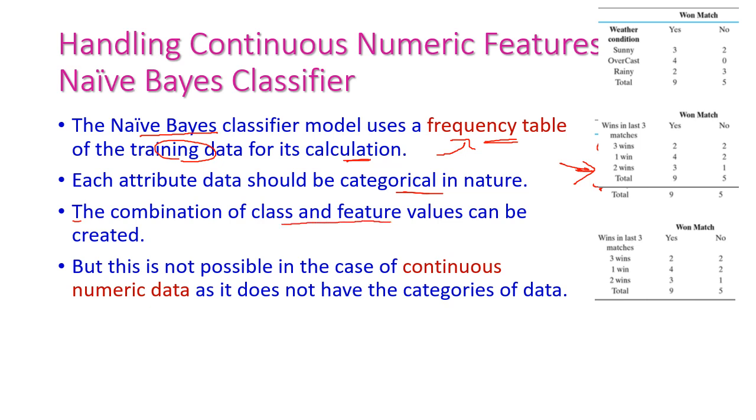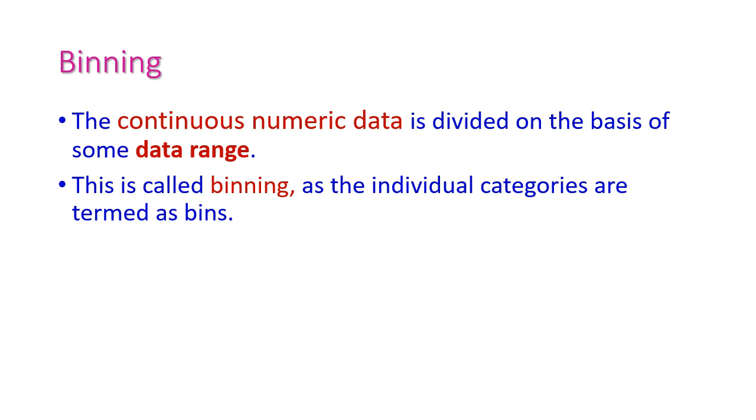The combination of class and feature value can be created. This is the combination of class and feature values. But it is not possible in the case of continuous numerical data. Here we have only three data, but if the data is continuous numerical data, then we cannot classify those data. Creating frequency table is very difficult in this case.